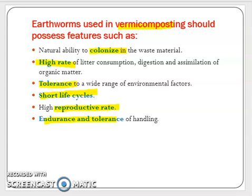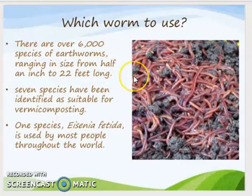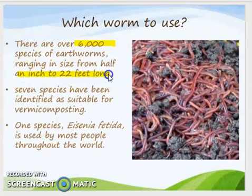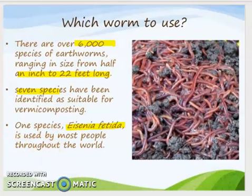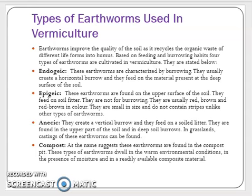There are about six thousand species of earthworm ranging in size from half an inch to 22 feet long, and seven species have been identified and used for the composting process. The most important one is Eisenia, which is largely used throughout the world. Earthworms improve the quality of soil by recycling waste of different life forms into humus. Based on feeding and burrowing habits, there are four types of earthworms cultivated in vermiculture.